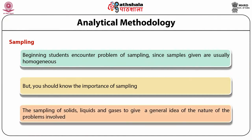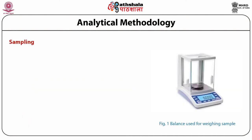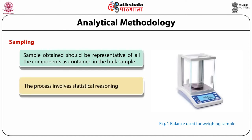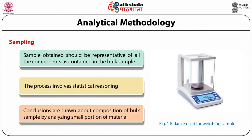I shall discuss the sampling of solids, liquids, and gases to give a general idea of the nature of the problems involved. Before carrying out an analysis, a chemist attempts to obtain a sample that is representative of all the components and their amounts as contained in the bulk sample. The process involves statistical reasoning, in that conclusions will be drawn about the composition of the bulk sample from the analysis of a very small portion of the material.